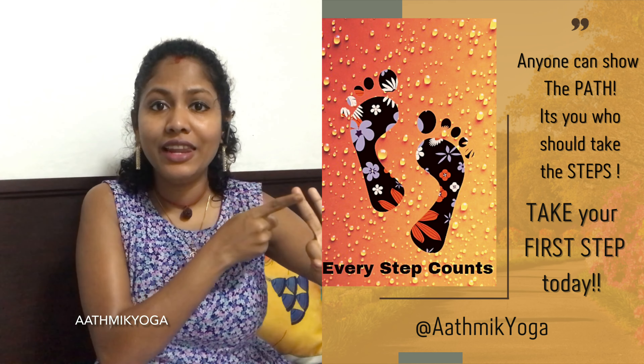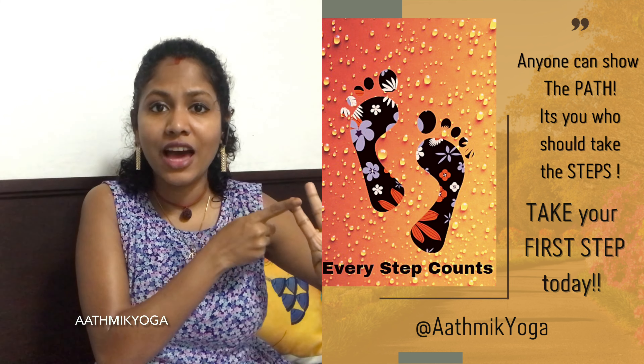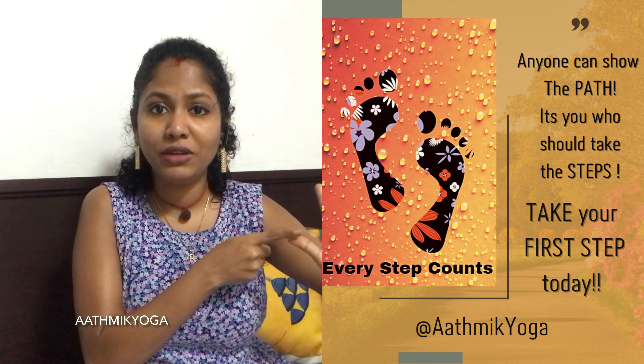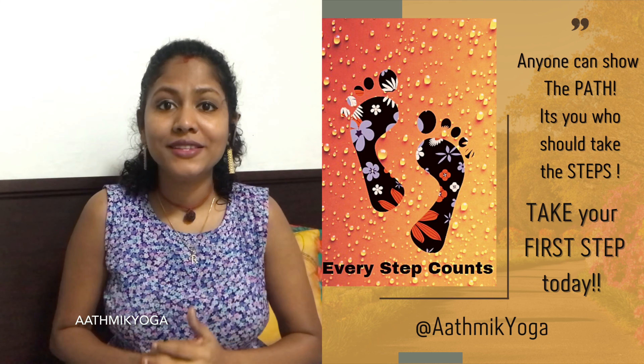According to traditional Chinese medicine, the major five organs in our body are heart, kidney, liver, lungs, and spleen. Let us know which emotions affect these five organs when they are out of balance.